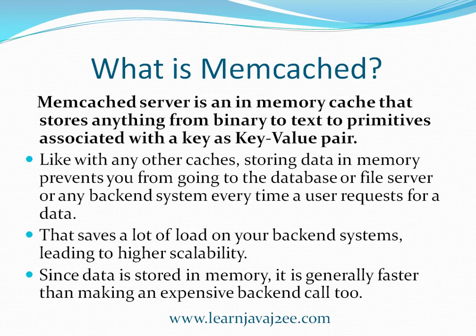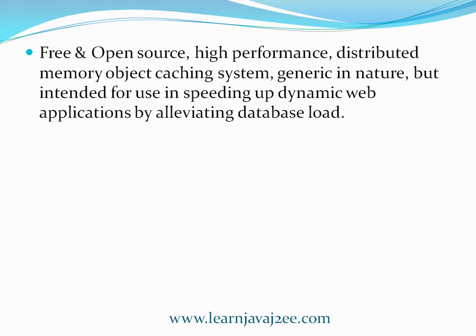Since data is stored in memory and not in the database, it is pretty much faster as compared to expensive backend calls. Memcached is free and open source — it is a high performance distributed memory object caching system. It is generic in nature and is not associated with any specific type of application. Applications can be written in Java, PHP, Scala, or any language. Memcached is a very generic application which can store data in the form of key-value pairs.